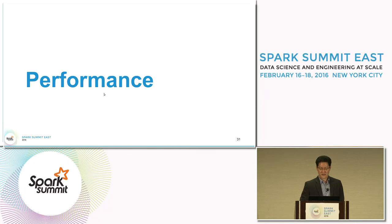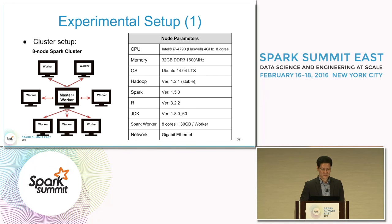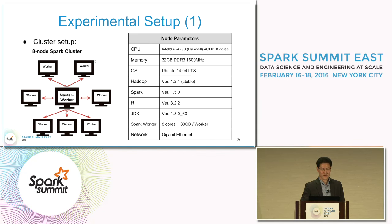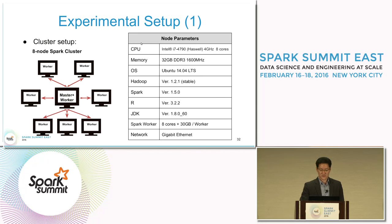The next four slides show the performance results. Here is our experimental setup. We have an eight-node Spark cluster with seven worker-only nodes and one master-driver node that also acts as a worker. Each node has a CPU of eight cores.